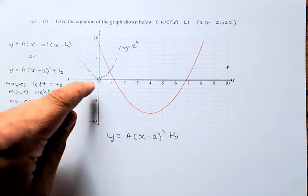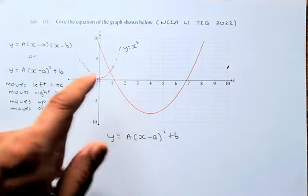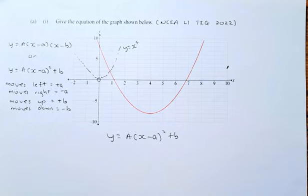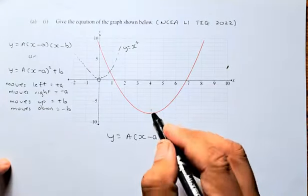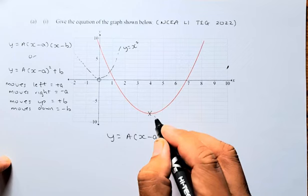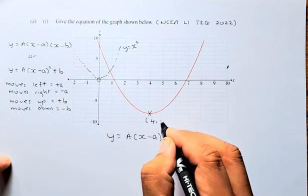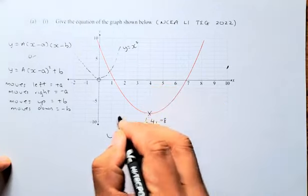Originally our graph is at 0, 0. So, y equals x squared is 0, 0. That graph has actually moved 4 to the right and 8 down. How do I know this? Because at this vertex here, the lowest point is at 4, minus 8. If you look here, it's 4 minus 8.